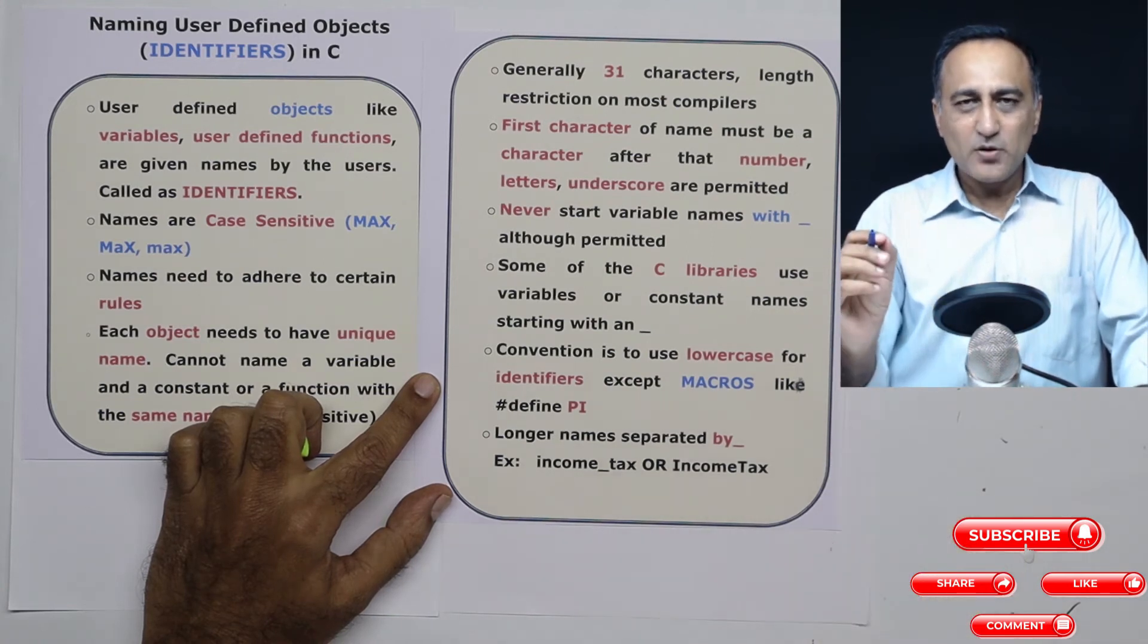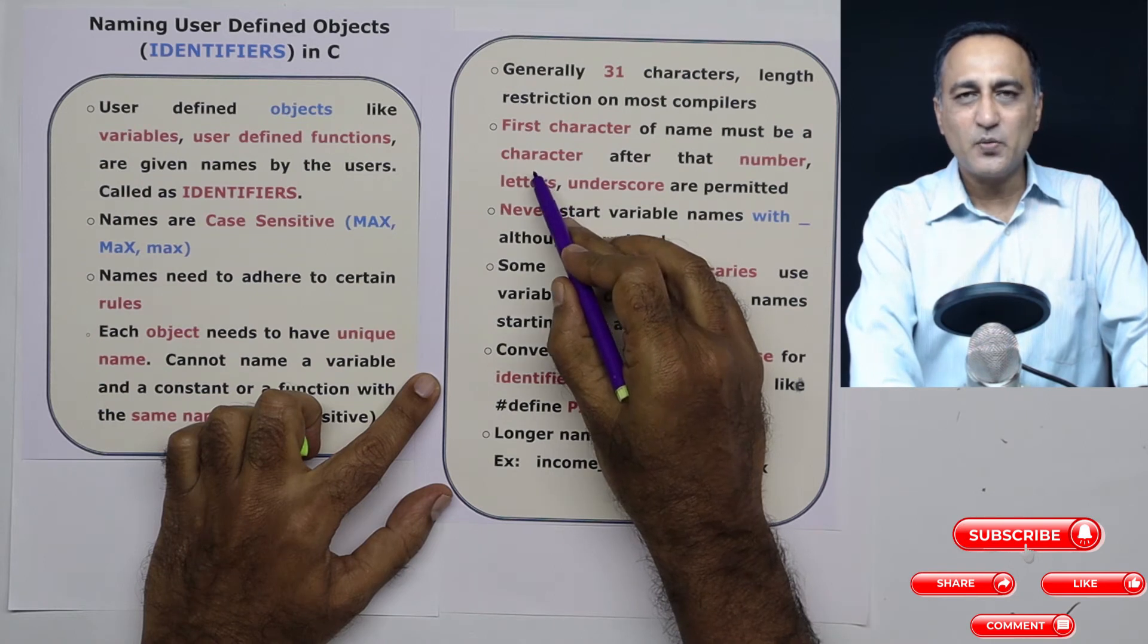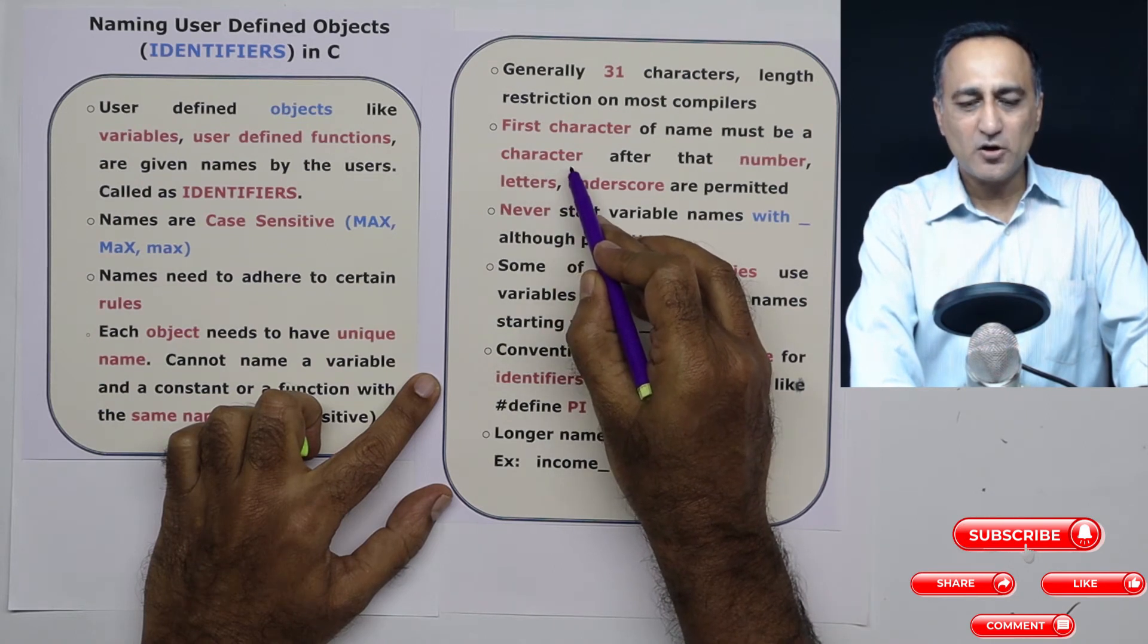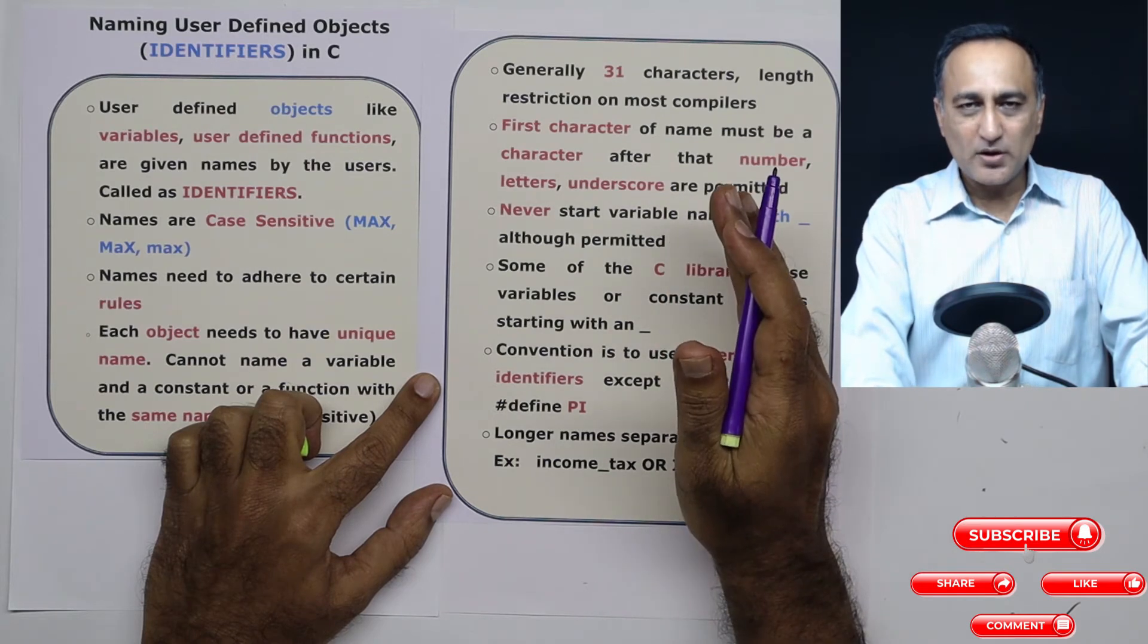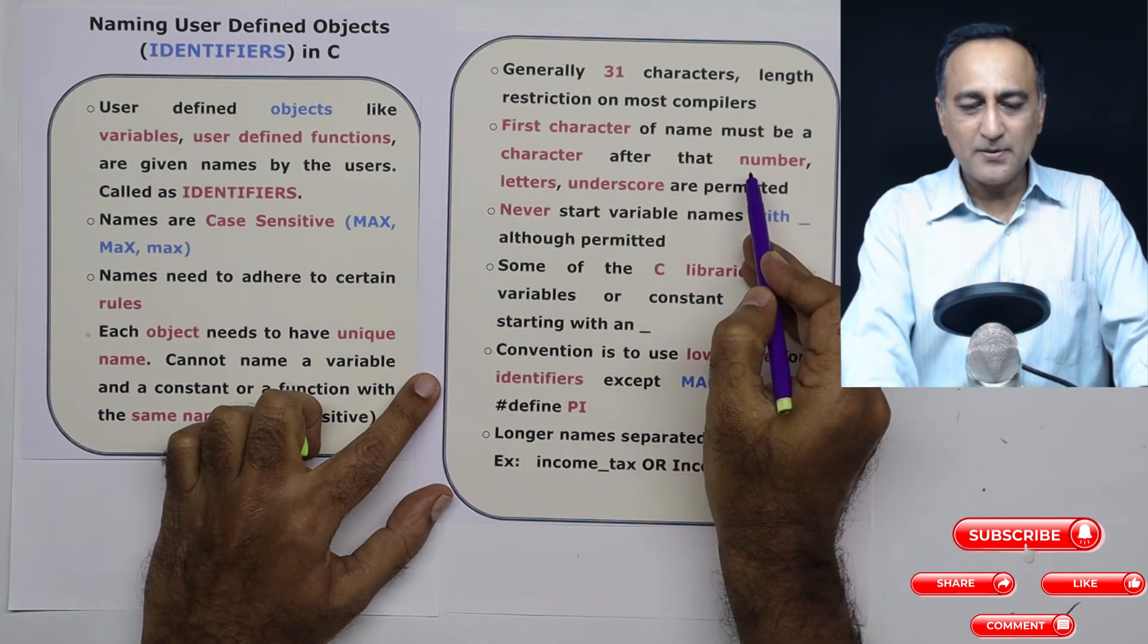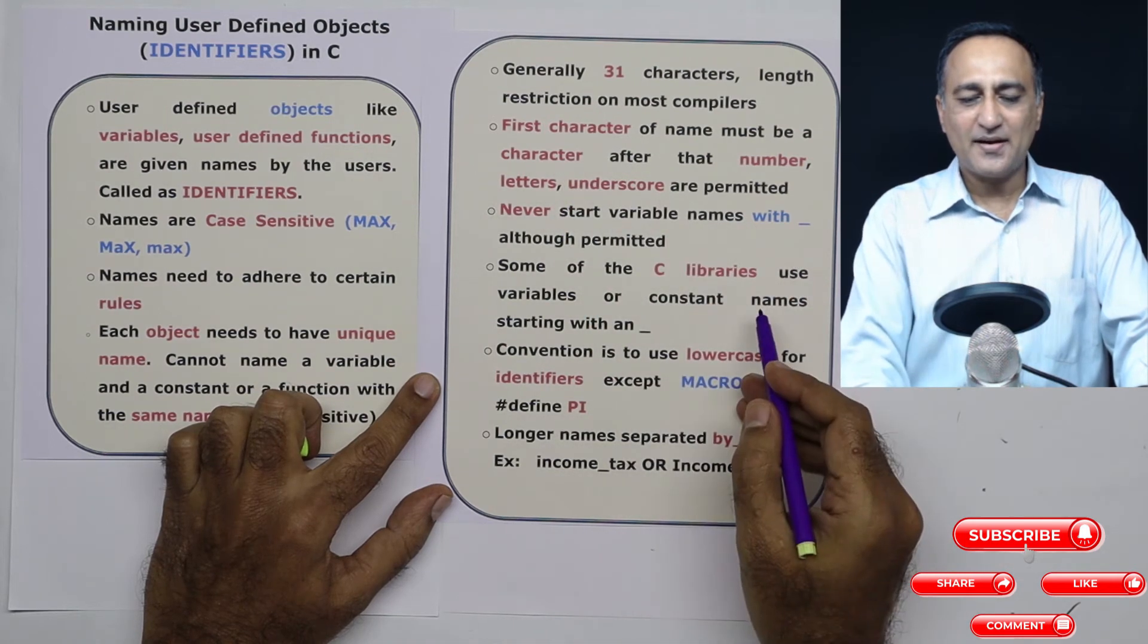Now a few important rules. The name of a variable must always start with a character alphabet between A to Z, uppercase or lowercase. After that, it can be followed by an underscore, it can be followed by a number, or it can be followed by other letters or characters.